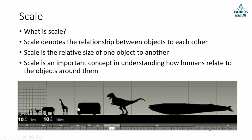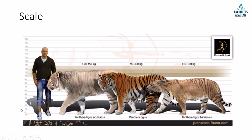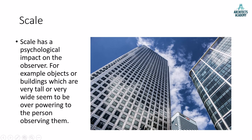Scale is an important concept in understanding how humans relate to the objects around them, and it is especially important when studying architecture. This sketch shows the relationship of a human being to different structures, where different objects have different relationships to the height of the human being, shown linearly so you can see the relative scale between them.